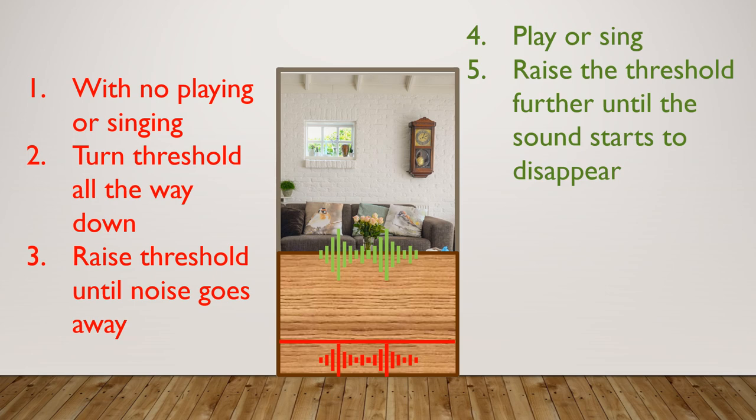Now, listening to the sound coming through the channel, continue to raise the threshold until the audio gets choppy or begins to disappear. A little below where you notice disappearing sound is the maximum setting the noise gate should be at. It isn't strictly necessary to know where this is, but knowing this value gives you a sense of how much room you have to work with. And if the band between where the noise disappears and where the sound starts disappearing is too close, you may need to raise your gain or do something to help that sound get a little bit cleaner.